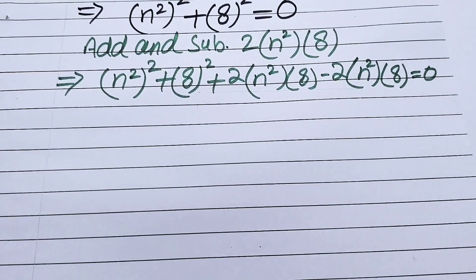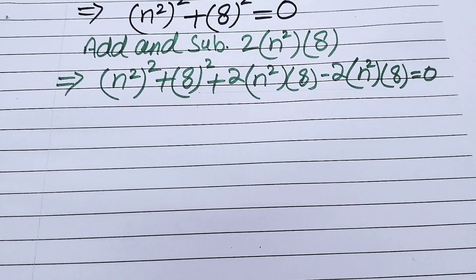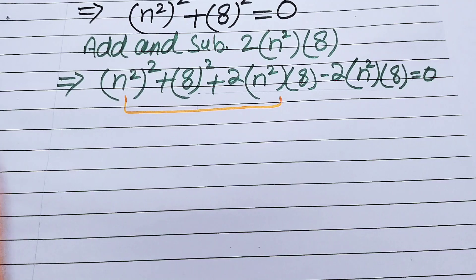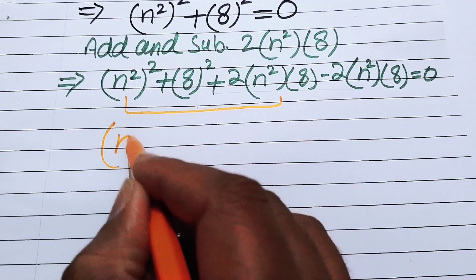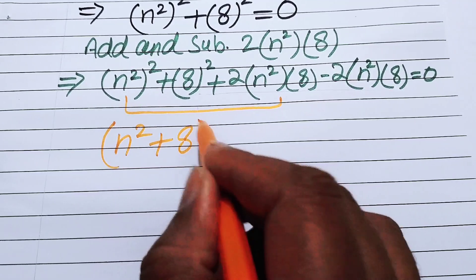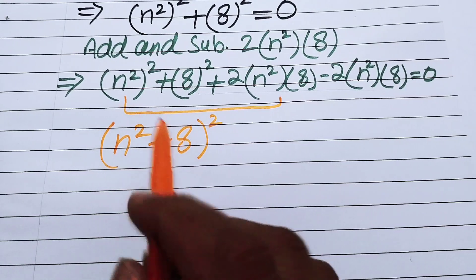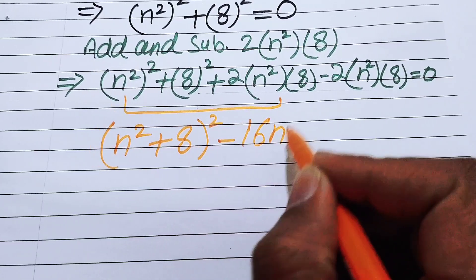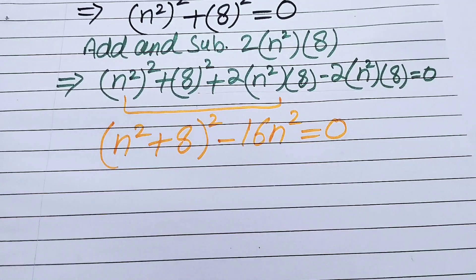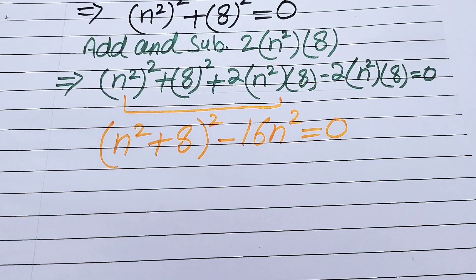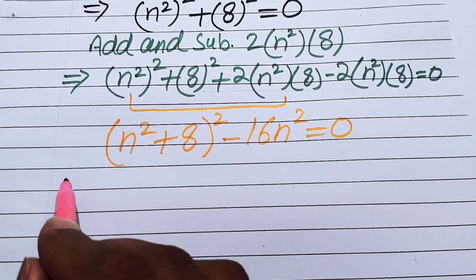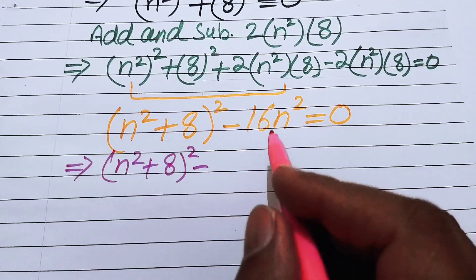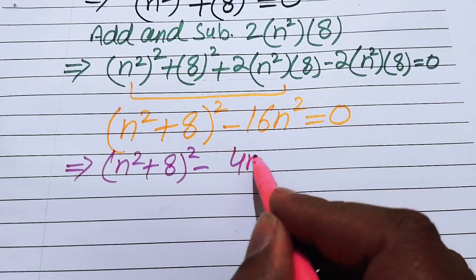If you focus on the first three terms, you can see they form the whole square of (n² + 8). Opening that square gives (n² + 8)², and we have minus 2 times 8, which is 16, times n². So we rewrite the equation as (n² + 8)² − 16n² = 0.